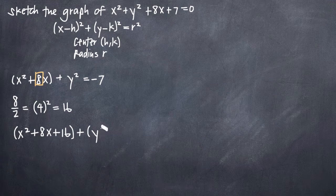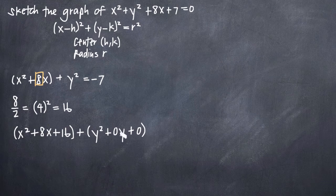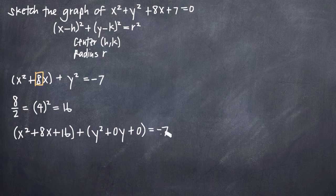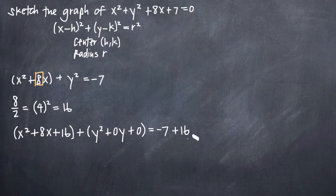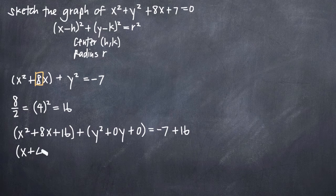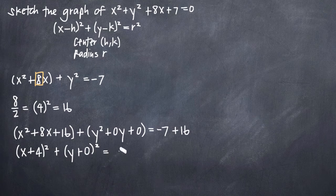For y squared, since there's no first-degree y term, we get y squared plus 0y plus 0 — we don't need to complete the square. So we add in 0y and 0 for the y group. On the right-hand side we have negative 7, and since we added 16 to the left, we also add 16 to the right, giving us negative 7 plus 16, which equals positive 9.